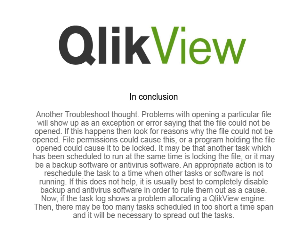Two common issues that will show up in the task log file are file-related problems and ClickView engine-related problems. Problems with opening a particular file will show up as an exception or error saying that the file could not be opened. If this happens, look for a reason why the file could not be opened. File permissions could cause this, or a program holding the file open could cause it to be locked. It may be that another task scheduled to run at the same time is locking the file, or it may be backup software or antivirus. An appropriate action is to reschedule the task to a time when other tasks or software are not running.